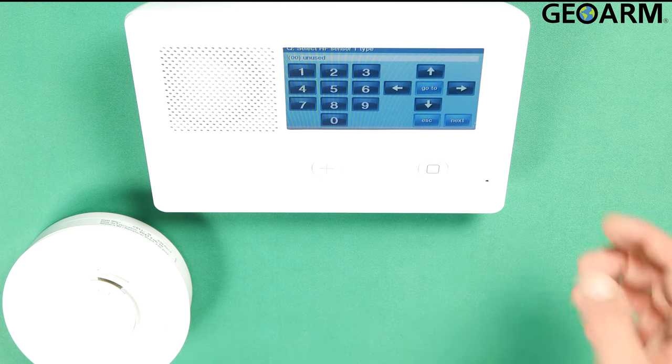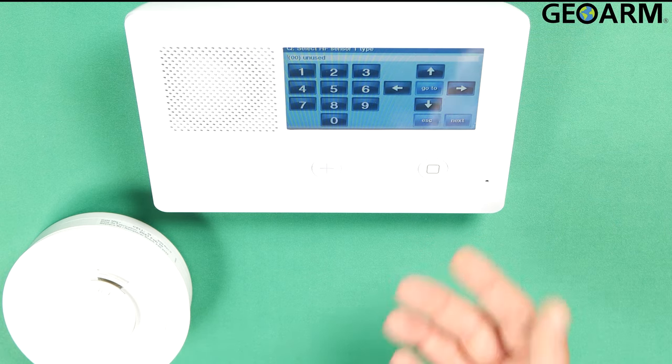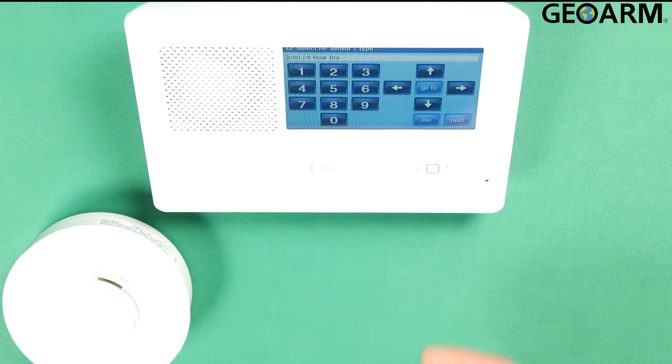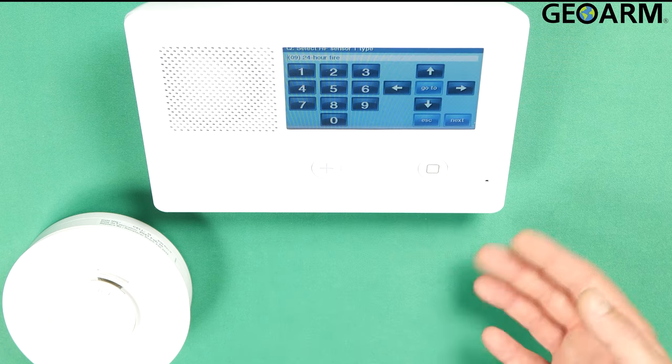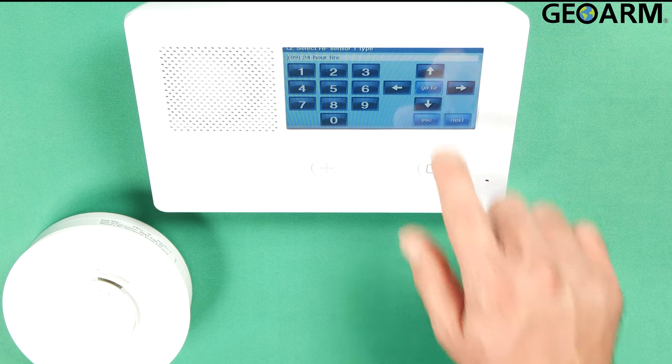Once you press the down arrow, it's going to want to know the sensor type. In this case it is a 09 which is a 24 hour fire. So you can either enter 09 or press the right and left arrows and it'll eventually get you to that. Hit the down arrow.